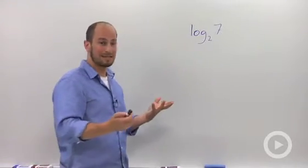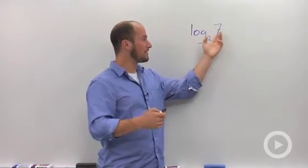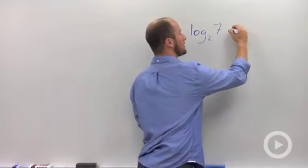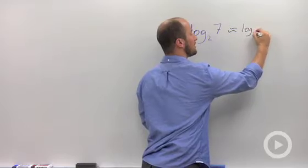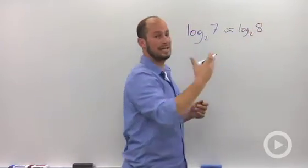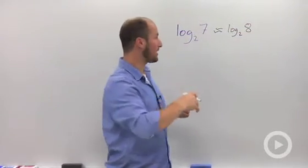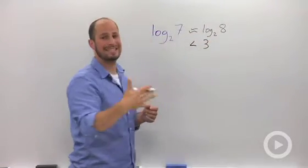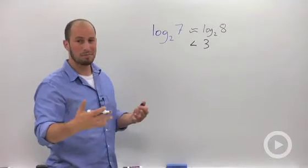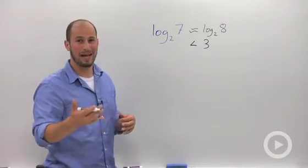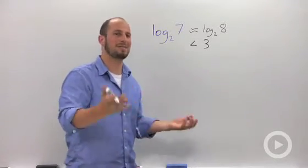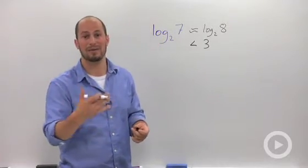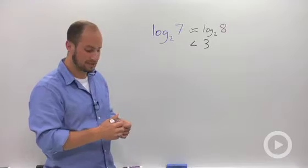So by common sense, log base 2 of 7 is fairly close to log base 2 of 8. Log base 2 of 8 is 3, since 2 to the third is equal to 8. So I know that log base 2 of 7 is going to be a little bit less than 3. But that typically is not going to really fly in terms of an answer. You can't just say it's going to be a little bit less than 3. So there has to be a way for us to figure out exactly what this is, which is where the change of base formula comes in.